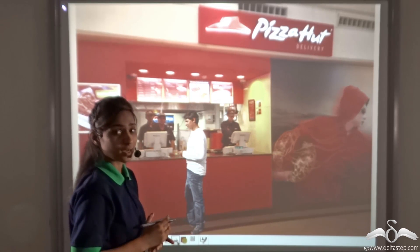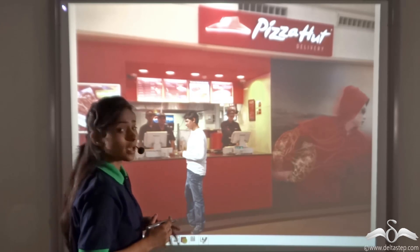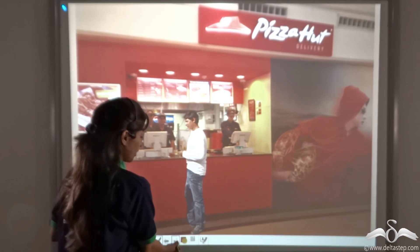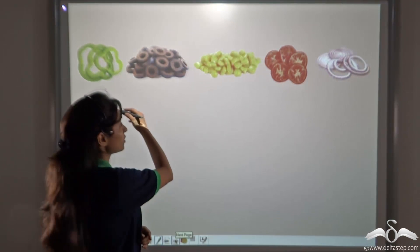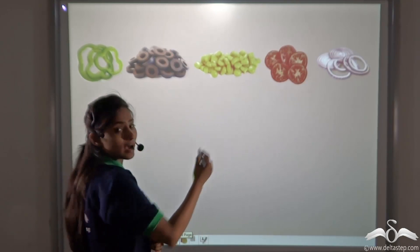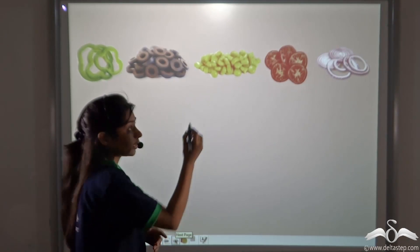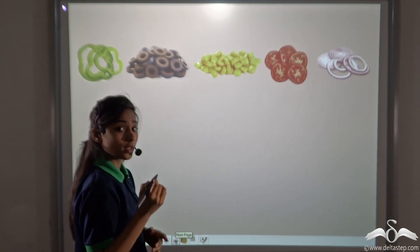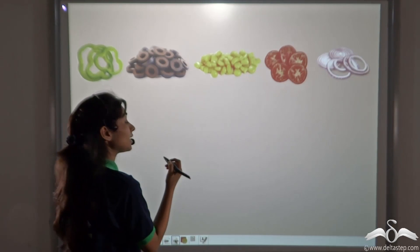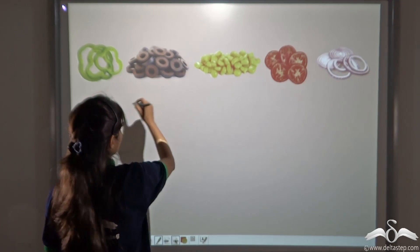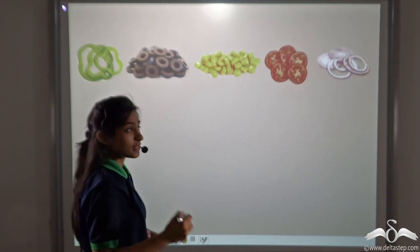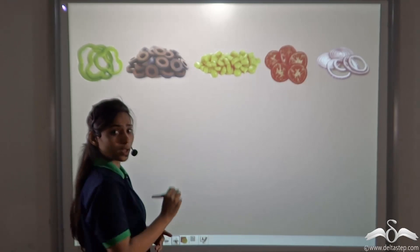One day, he goes to Pizza Hut to eat pizzas. They ask him for the toppings and give him these choices: capsicum, olives, corn, tomatoes, and onions. Now, he has to avoid onion. So what are the ways he can list the elements? He can either say, give me capsicum, olives, corn, and tomatoes, or he can say, give me everything except onions.